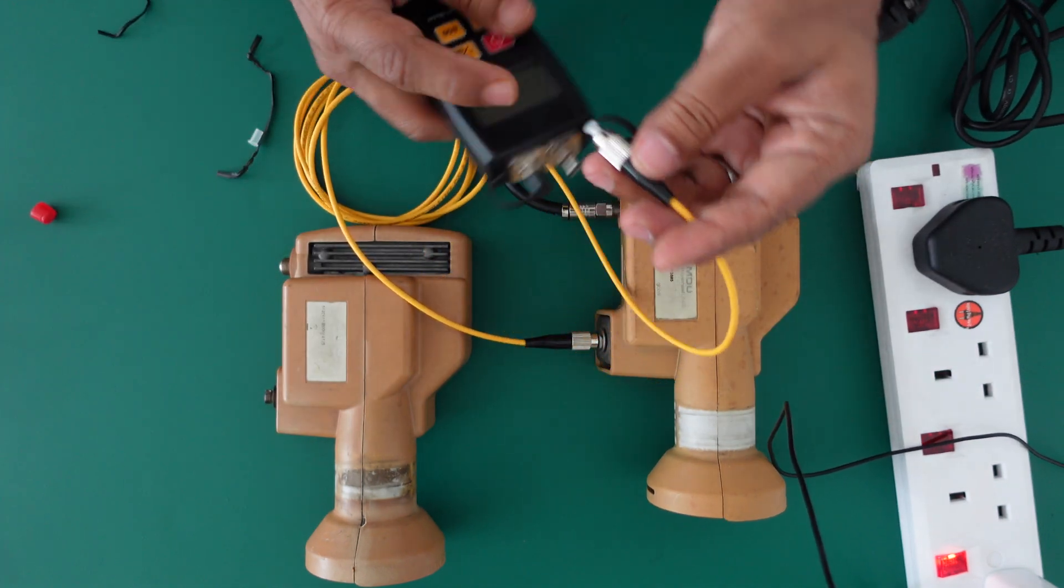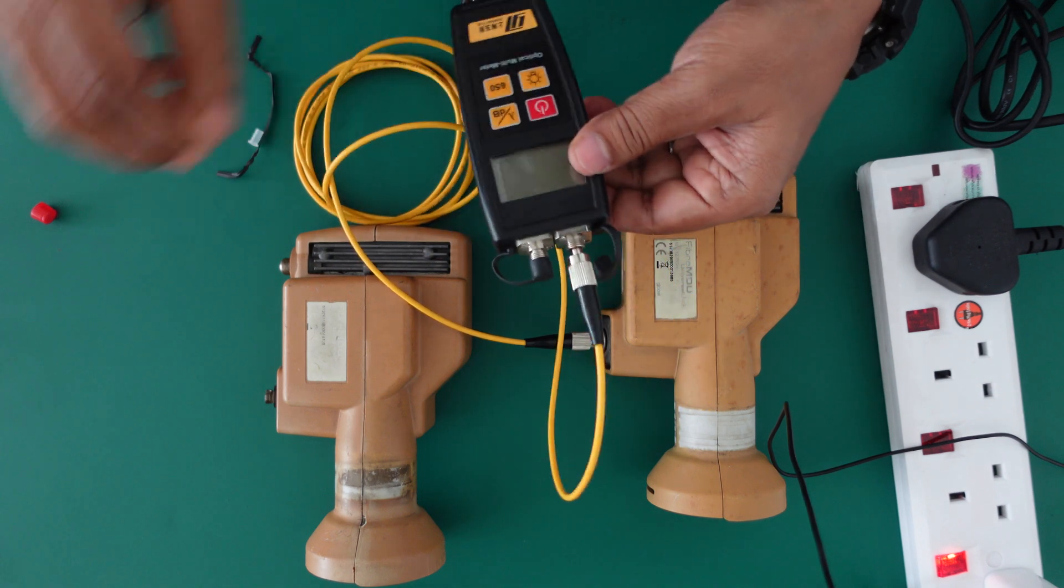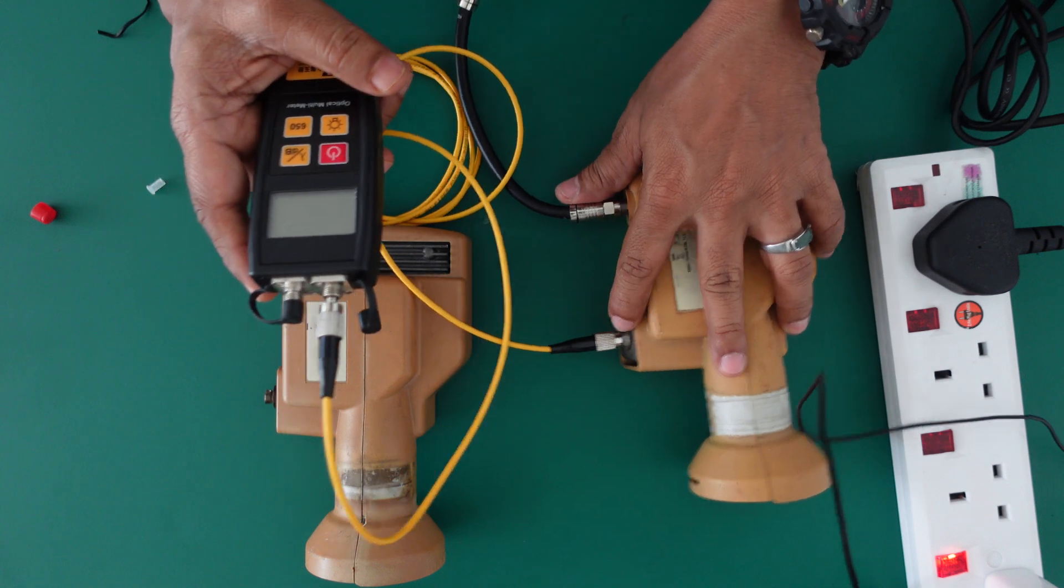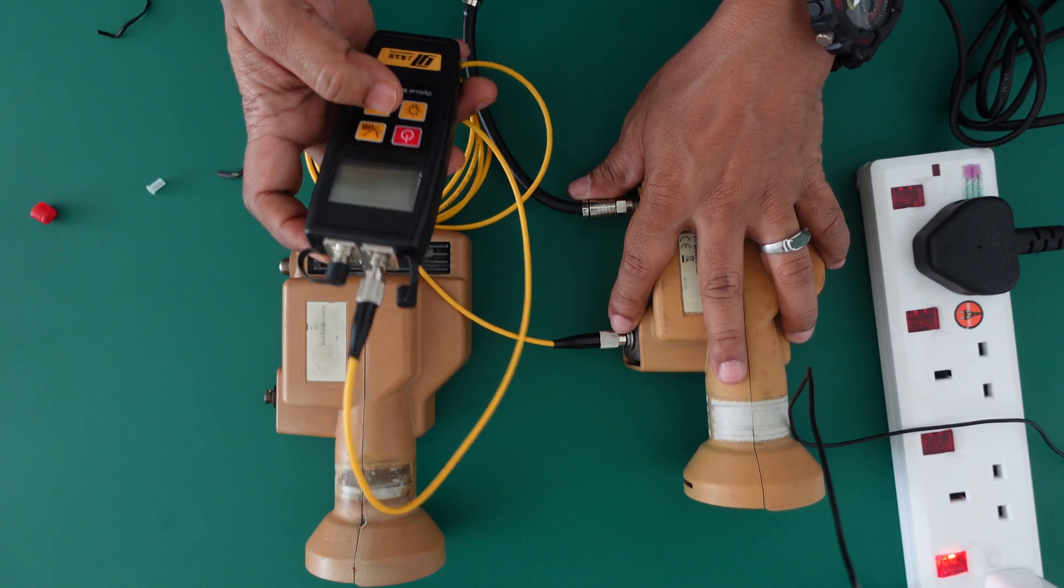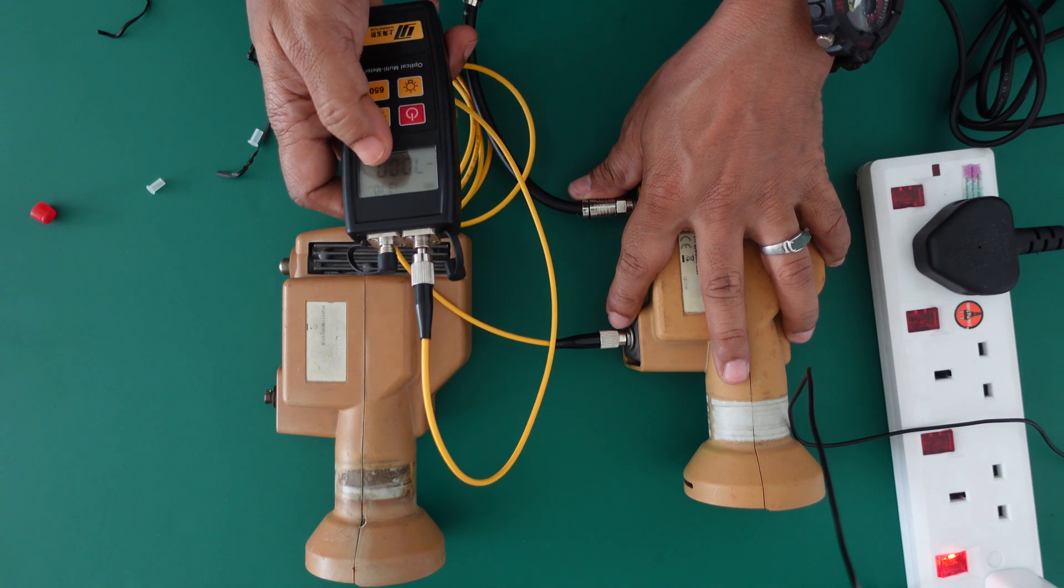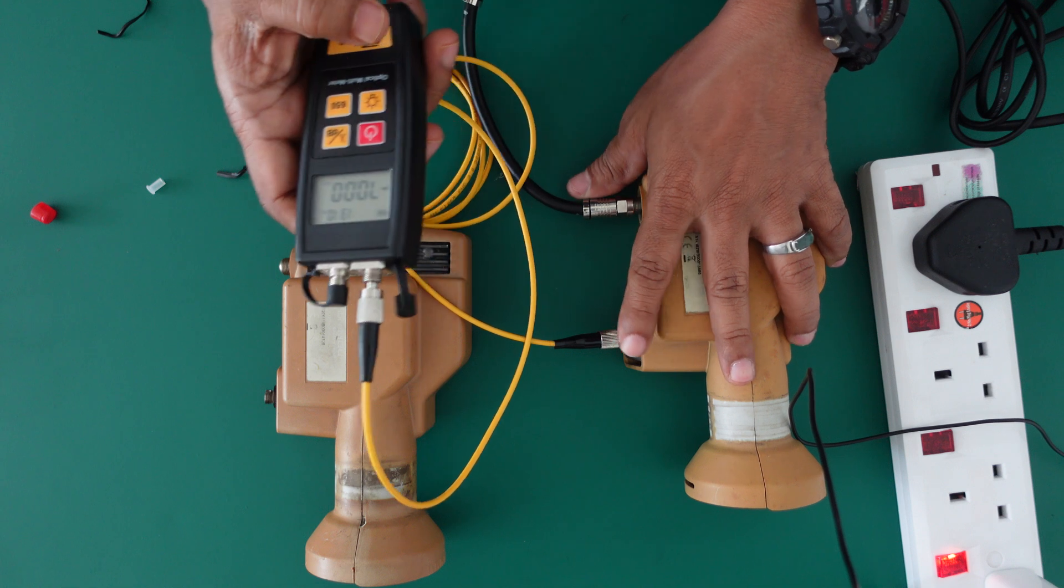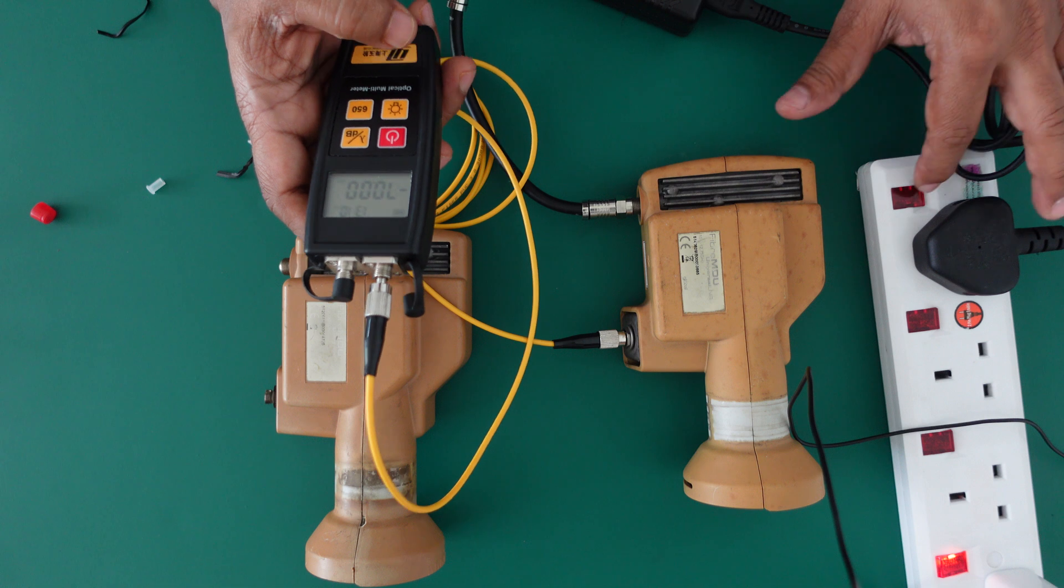I plug into the power meter. This output is the fiber 1310 nanometer. I already set it here to 1310 nanometer. I plug it into the power adapter. I turn on the power now.